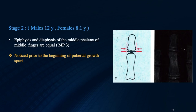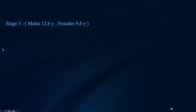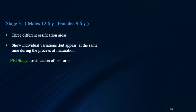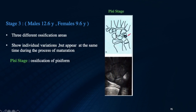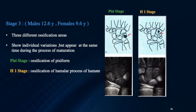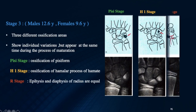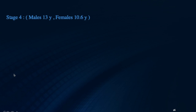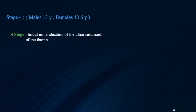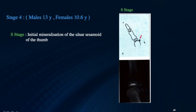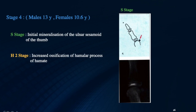In Stage 2, the epiphysis and diaphysis of the middle phalanx of the middle finger are equal, denoted as MP3, and this can be noticed prior to the beginning of the pubertal growth spurt. In Stage 3, there are three sub-stages: the Ps stage with ossification of the pisiform bone; the H1 stage with ossification of the hamulus process of the hamate; and the R stage where the epiphysis and diaphysis of the radius are equal. In Stage 4, there are two sub-stages: the S stage with the appearance of the sesamoid bone of the thumb, and the H2 stage with increased ossification of the hamulus process of the hamate.